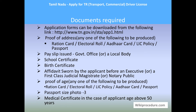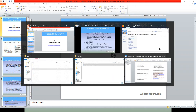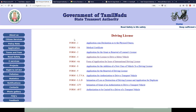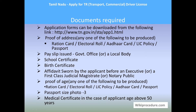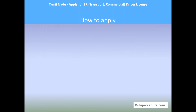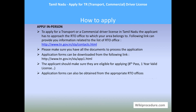Documents required: application forms can be downloaded from the link shown below. Proof of address — such as ration card, electoral ID, LIC policy, passport, or pay slip issued by government or private companies, school certificate, birth certificate, or an affidavit by an executive, first class judicial magistrate, or notary public. Proof of age by ration card, electoral ID, LIC policy, or passport. Three passport-size photos. Medical certificate if the applicant is above 50 years.